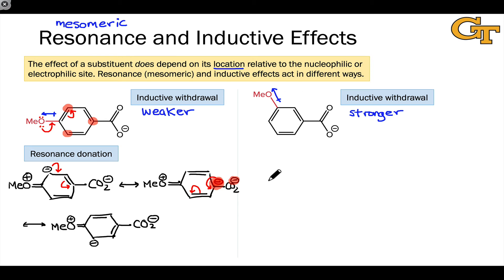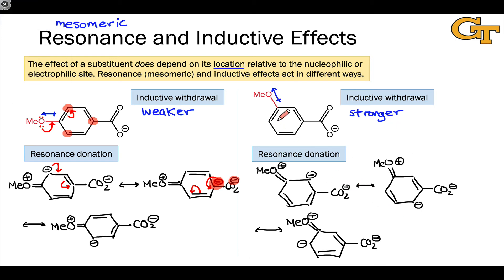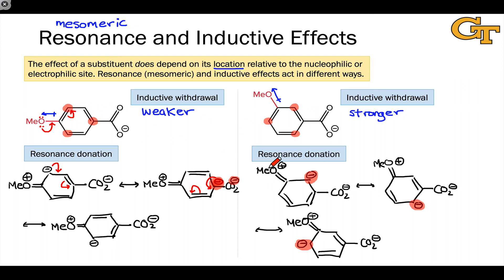Now let's look at the meta isomer and see what happens — we're going to notice a significant difference between the para and meta isomers. Once again, we can see that the methoxy group has donated electron density to carbons that are ortho and para with respect to the location of the methoxy substituent. Notice that the carbon bearing the carboxylate is not one of these positions that receives an especially large amount of electron density from the methoxy group, so it's not profoundly increased in electron density as a result of the methoxy group. This difference in resonance donation is key.